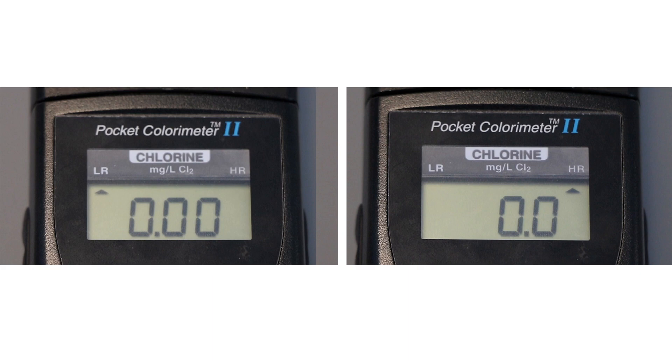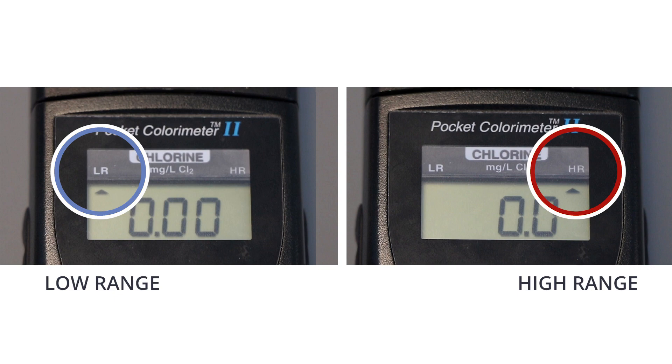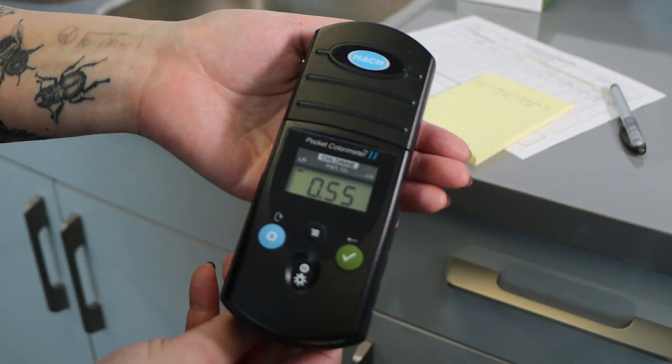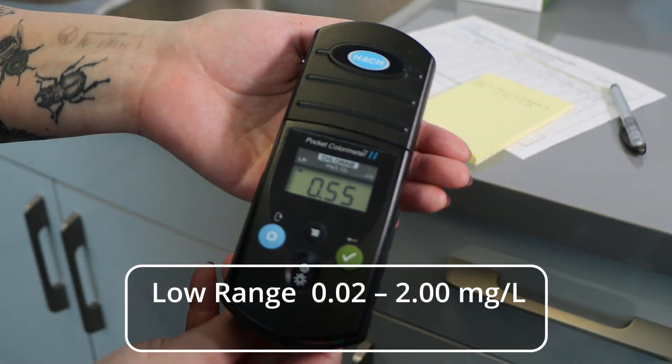A typical pocket chlorometer has two ranges, low and high. Before using the chlorometer you must select the proper range. The low setting reads measurements from 0.02 to 2.00 milligrams per liter of chlorine.